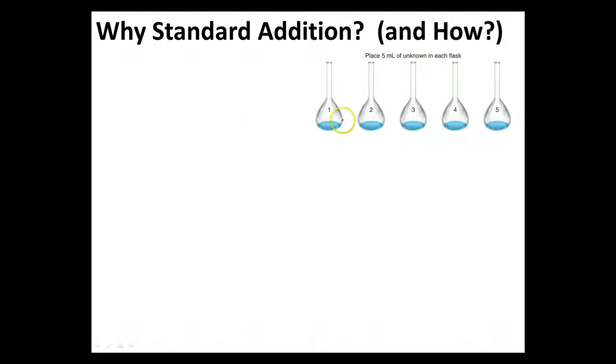So, notice every one of these has the exact same amount. Now, if we were to go ahead and stick them onto our spectrometer, or whatever instrument we're measuring with, we'd say yep, we've got a signal, but we haven't added any standard yet. So, if I'm keeping track, I'd go ahead and make a graph, and I'd see I've got a point, and I have added 0 milliliters of spike so far.